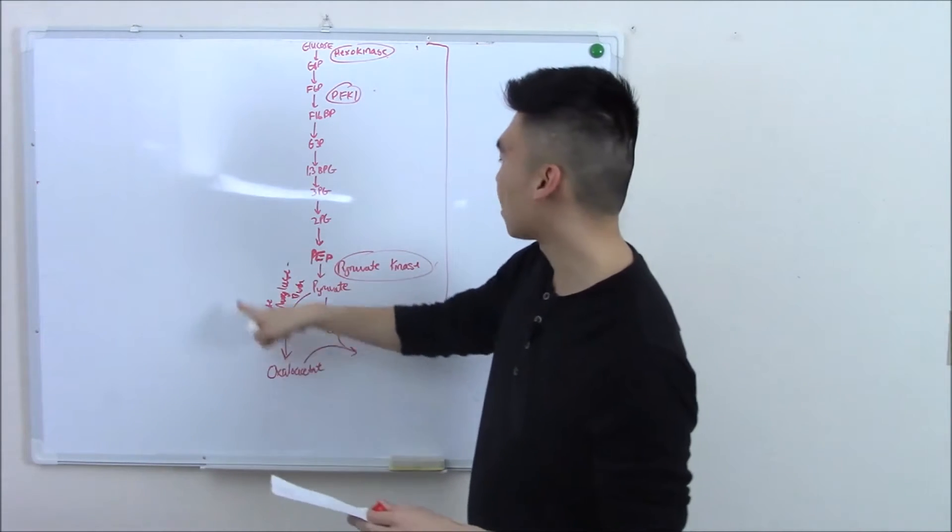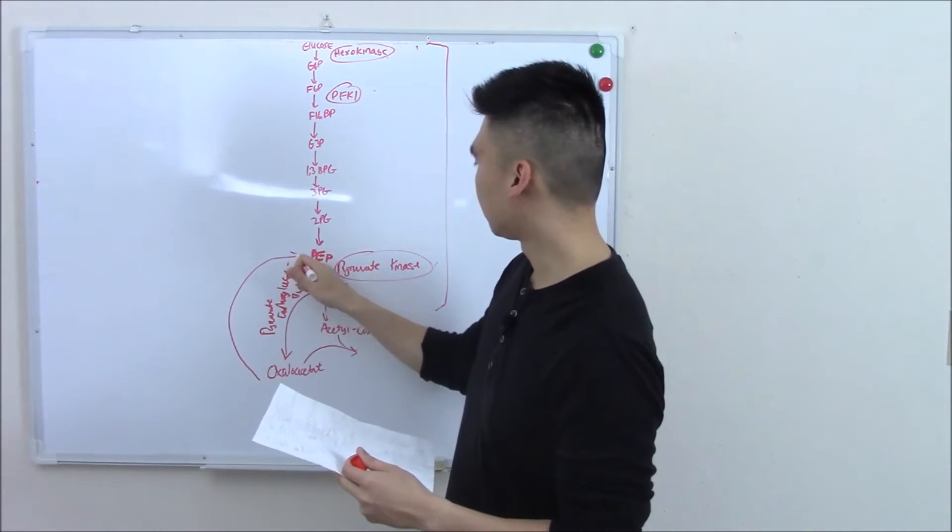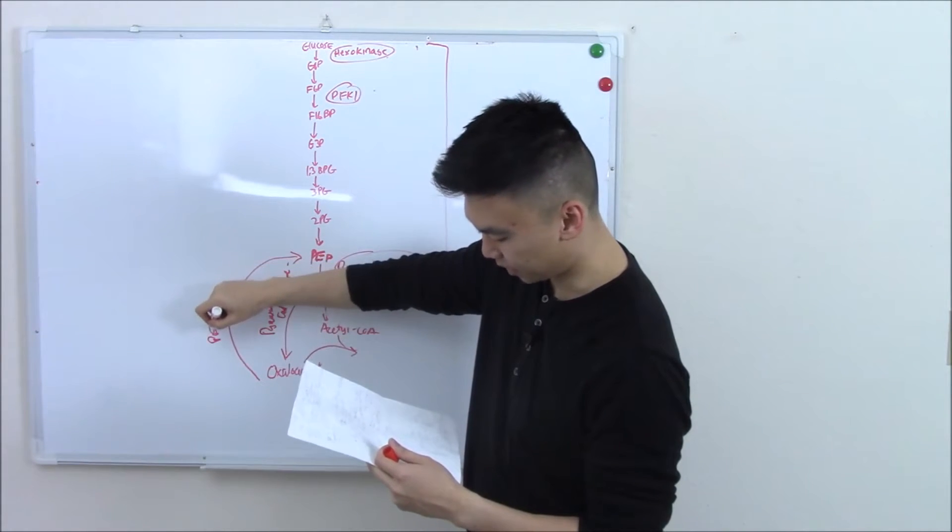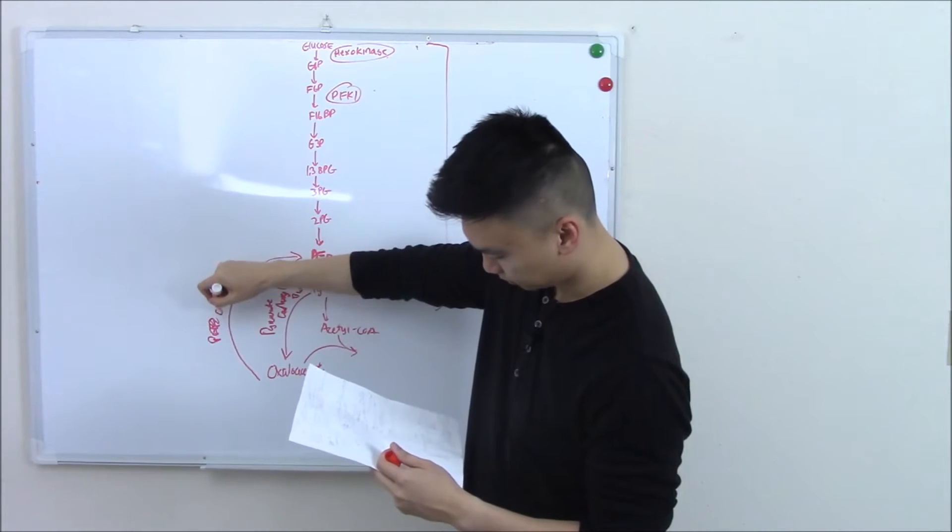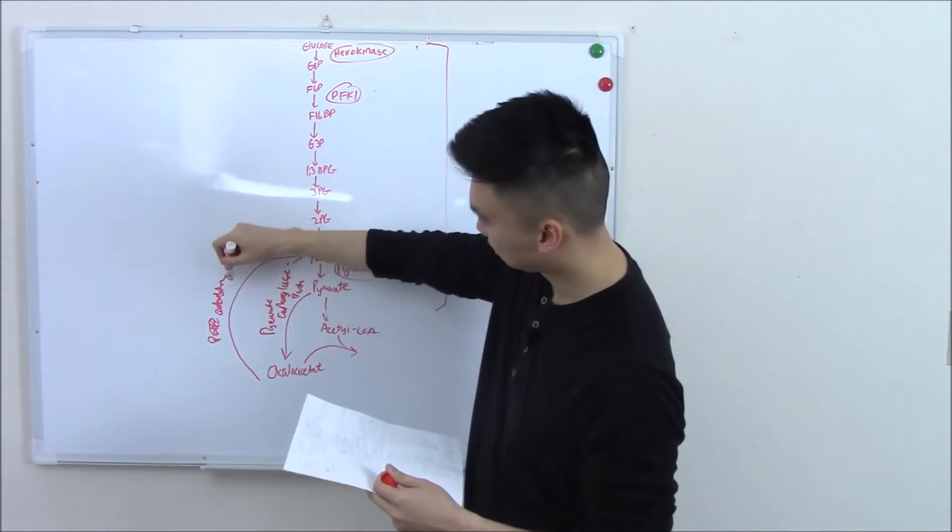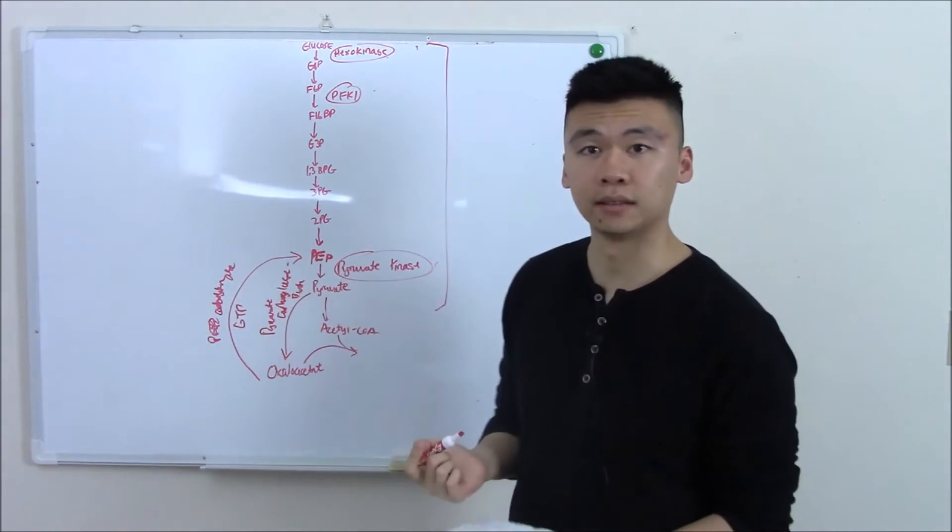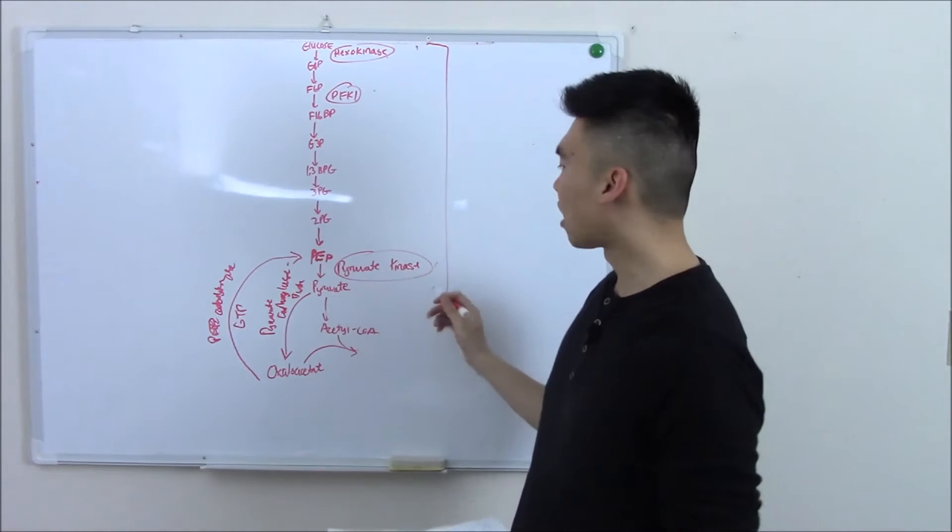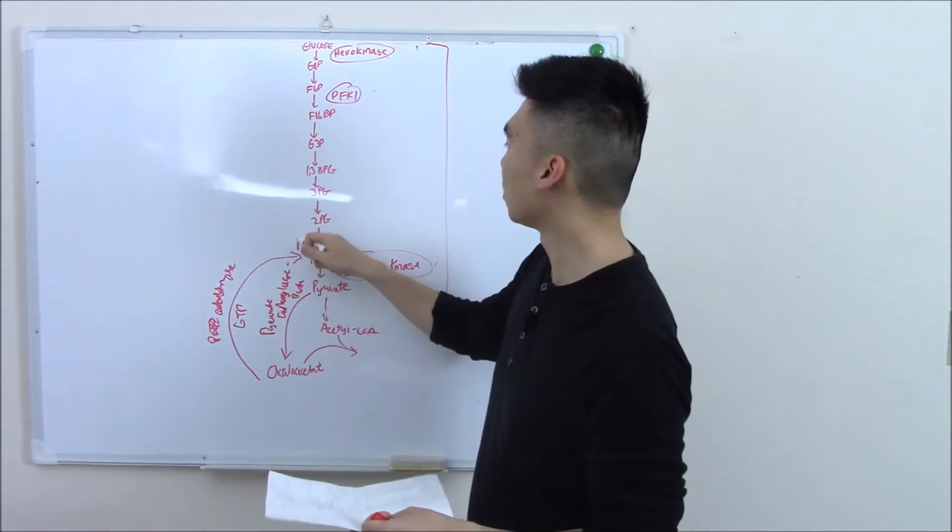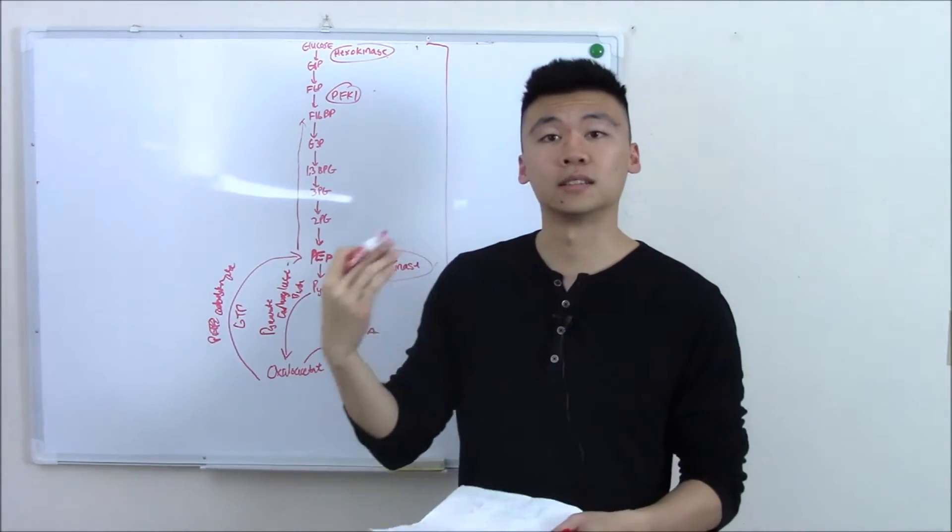So it jumps down here and catapults up to PEP via PEP carboxykinase with the help of GTP. So I made it past the first roadblock. Now it can move in reverse, moving on up, moving on up, moving on up. Oh, just hit another roadblock!